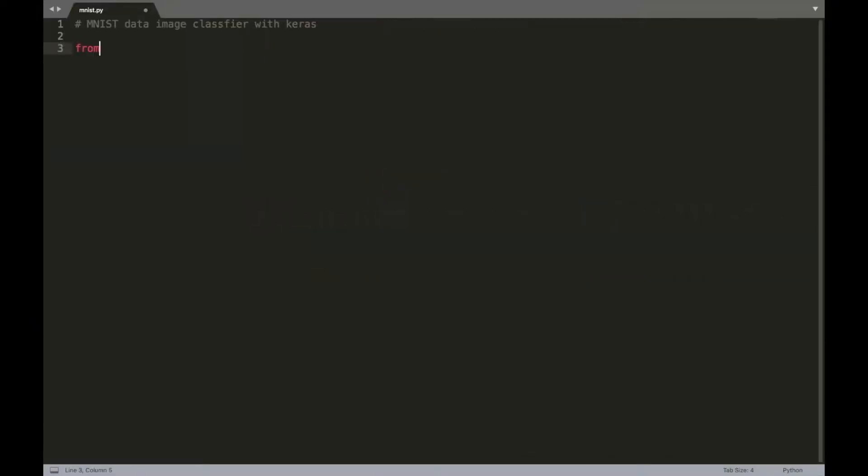The MNIST dataset comes preloaded in Keras so you don't have to worry about downloading the dataset or do any preprocessing. We get the training data and the testing data along with the corresponding labels by calling the load data method.